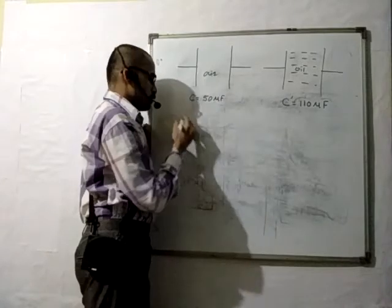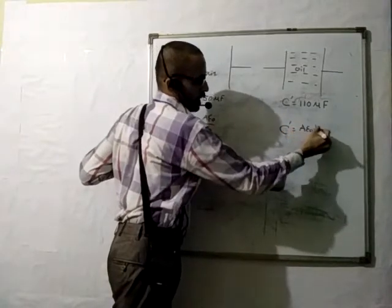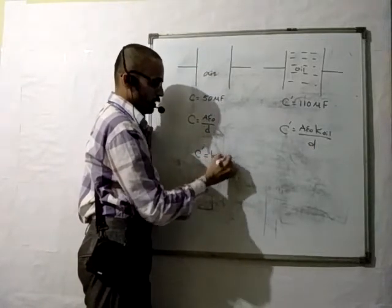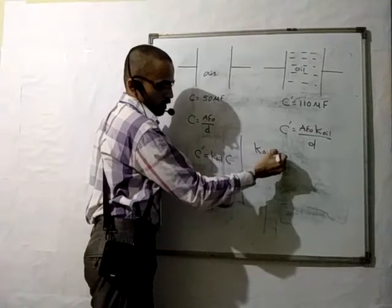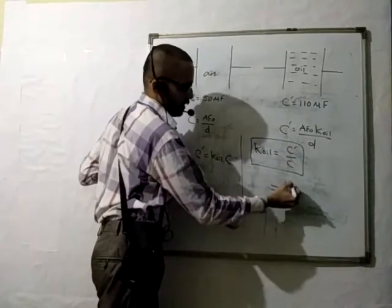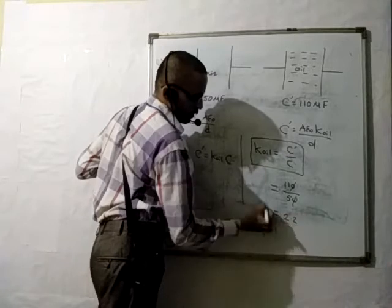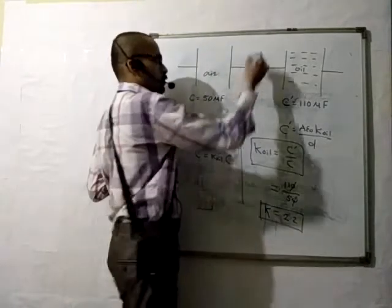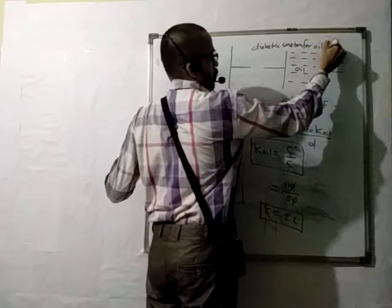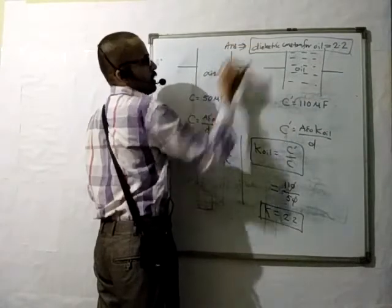The relation is: C = A × epsilon_naught / d in air, and C' = A × epsilon_naught × k_oil / d in oil. So C' = k_oil × C. Therefore k_oil = C' / C = 110 / 50 = 11/5 = 2.2. So the dielectric constant of oil is 2.2.